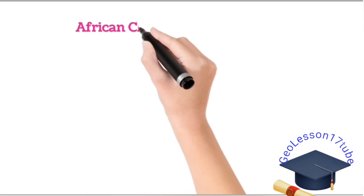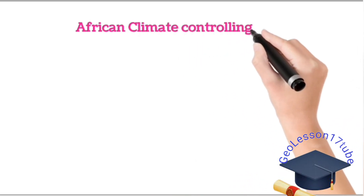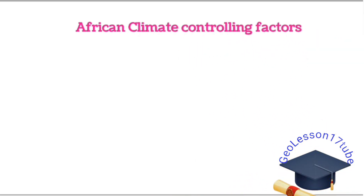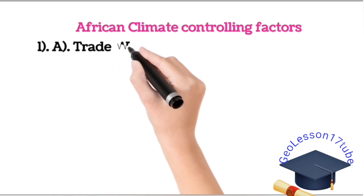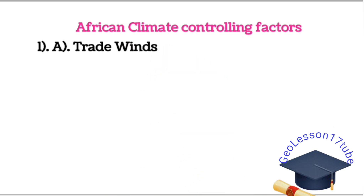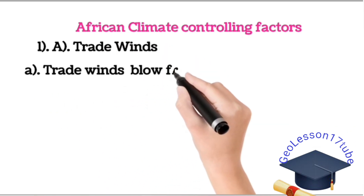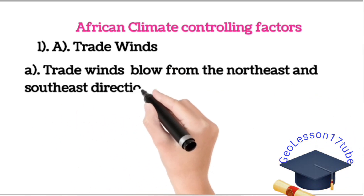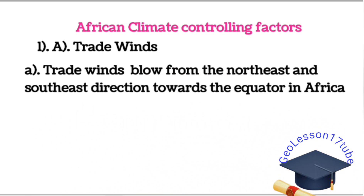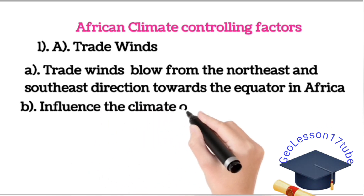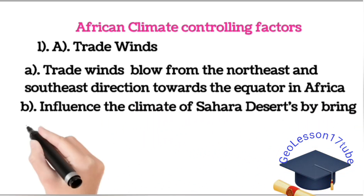Factors controlling the climate of Africa. First, trade winds blow from the northeast and southeast directions towards the equator in Africa. As a result, equatorial regions receive the highest rainfall, referred to as convectional rainfall, because it is an area of rising air that cools and condenses in the form of rainfall.